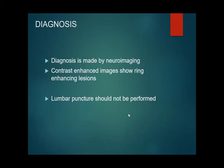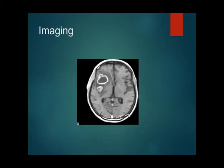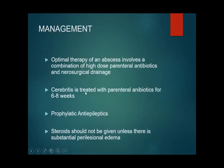Management of brain abscess involves optimal therapy combining high-dose parenteral antibiotics and neurosurgical drainage. If the patient is in the cerebritis stage, parenteral antibiotics alone are used — treatment is prolonged for 6–8 weeks, unlike the 10–14 days for meningitis. Prophylactic antiepileptic drugs are given. Steroids should be avoided unless there is significant perilesional edema or midline shift.